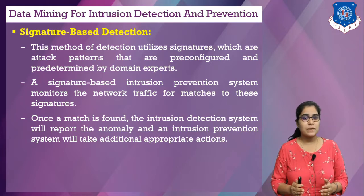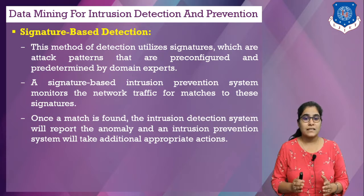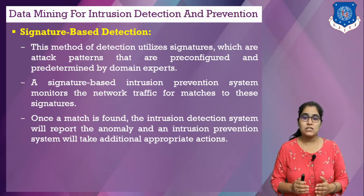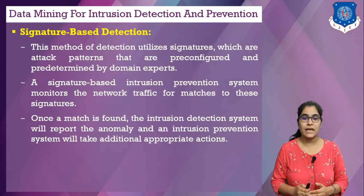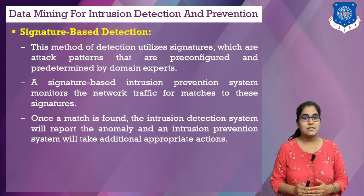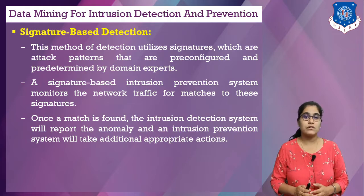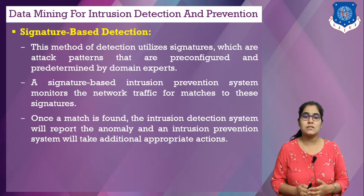A signature-based intrusion prevention system monitors network traffic for matches to these signatures. Once a match is found, the intrusion detection system reports the anomaly and an intrusion prevention system takes additional appropriate actions. Since systems are usually quite dynamic, the signature needs to be updated continuously whenever new software versions arrive or changes in network configuration occur.